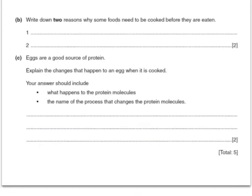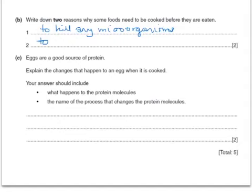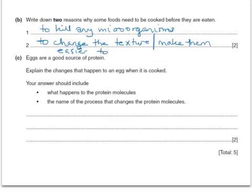Write down two reasons why foods need to be cooked before they're eaten. One reason might be to kill any microorganisms, and another reason might be to change the texture or make them easier to digest. I wouldn't recommend writing three answers, but there are probably three acceptable answers on the mark scheme.